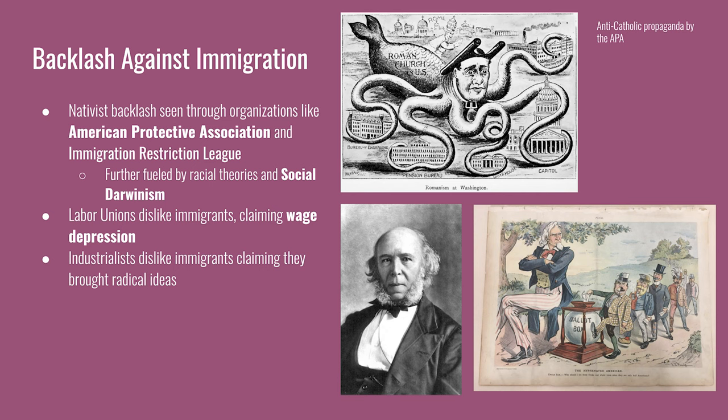The perception was that because immigrants were living in cities with dirty and poor conditions, the people that lived there were lesser people. This was further fueled by racial theories and social Darwinism, developed by sociologist Herbert Spencer. There is also a sense of anti-Catholicism that is a continuity from the previous period. The political cartoon from the American Protective Association portrays the Catholic Church in the United States being controlled by Rome and the Pope, with their tentacles in different parts of government.